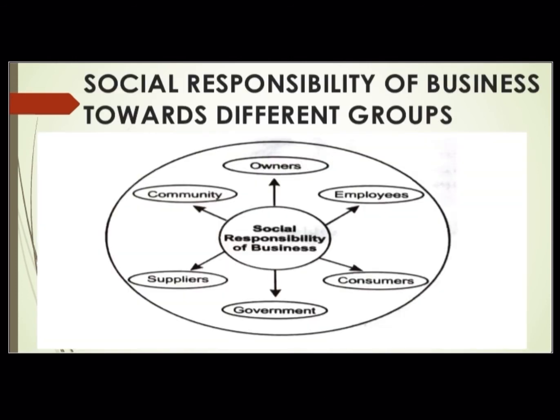Next comes social responsibility of business towards different groups. Different groups include owners, employees, consumers, government, suppliers and community. As we know business is a part of society, so business organizations ko social responsibilities ko fulfill karna hoga towards various parties of society which includes owners, employees, customers, government, suppliers and community.